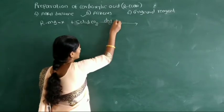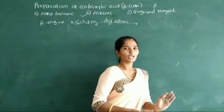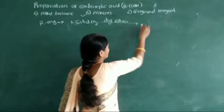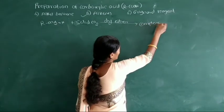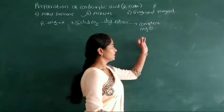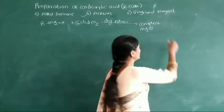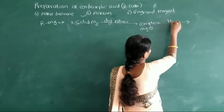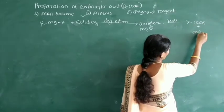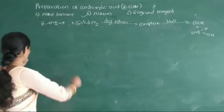In the presence of dry solid CO2, the Grignard reagent reacts and forms a magnesium salt of carboxylic acid as a complex. Here, formation of a magnesium salt of complex. And this complex, on acid hydrolysis in the presence of water, gives formation of carboxylic acid.